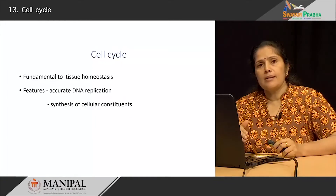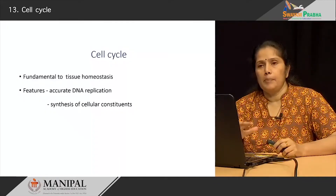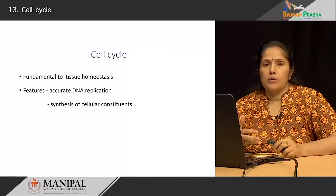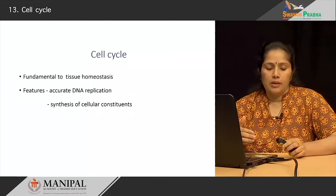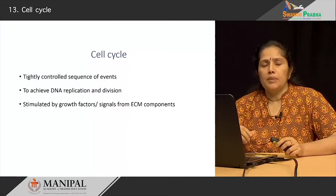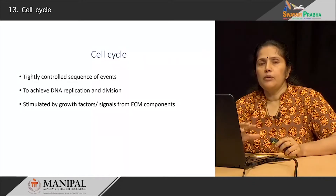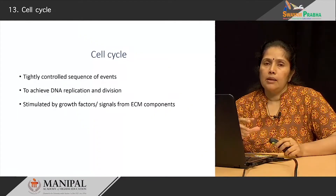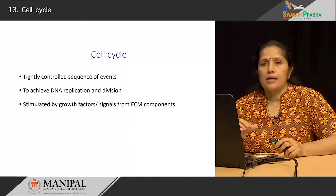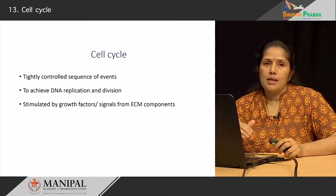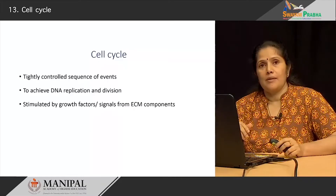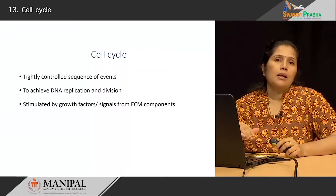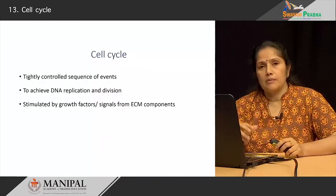The cell cycle requires that there is accurate DNA replication, and along with the DNA replication, the cellular components also have to be reconstituted appropriately. So it has two very important key requirements. This entire process is very tightly controlled to achieve DNA replication as well as cell division, stimulated by growth factors and signals from the extracellular matrix compartment.